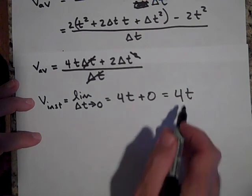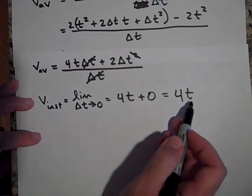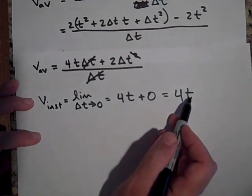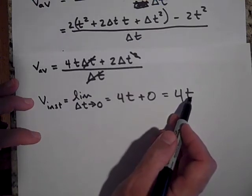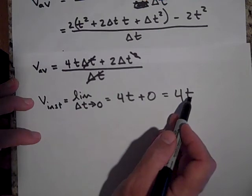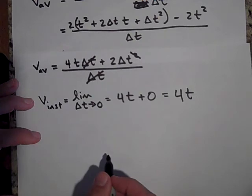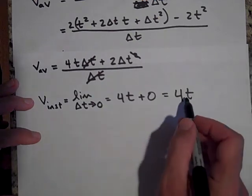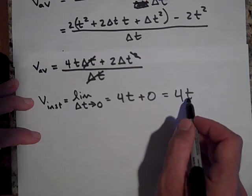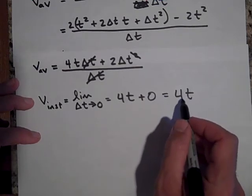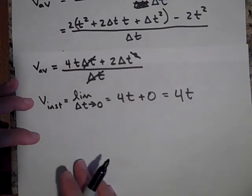So our instantaneous velocity is 4t. Now we shouldn't be surprised that there's a t in there. That just means that with every single time that you put in, you're going to get a different instantaneous velocity. Let me say that again. Every time is going to give you, every different time is going to give you a different slope. In fact, at t equals zero, the slope is zero. But at t equals one, the slope is four. So that's how that works.